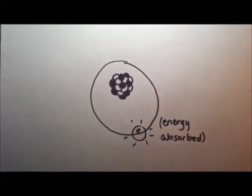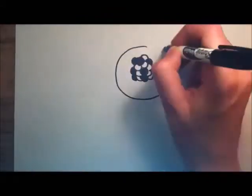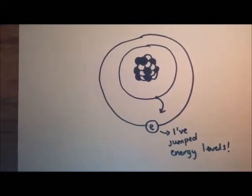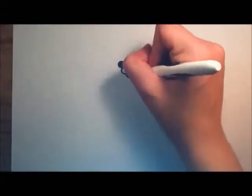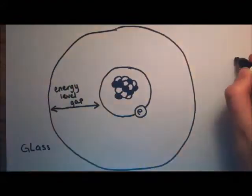There is a catch to this, however. For a photon to interact and be absorbed by the electron, it must have enough energy for that electron to reach the next energy field. The further the energy levels are apart, the more energy is needed to bridge the gap and enter a higher energy level.